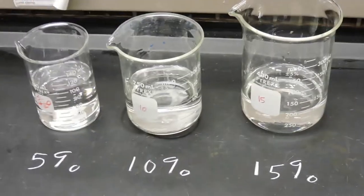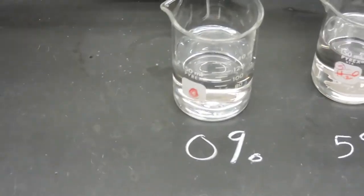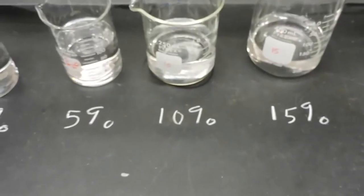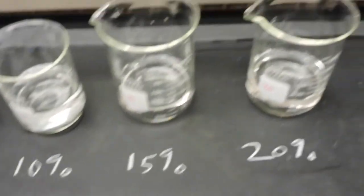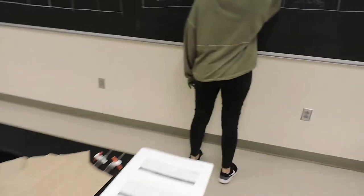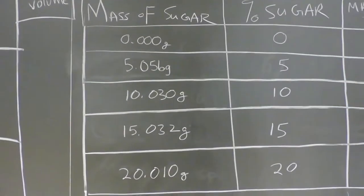We've also made the other standards. We have a 0% sugar standard, which is just water, 5% sugar, 10% sugar, 15% sugar, and 20% sugar. So the mass of all those sugars and the percent of sugar are listed here.